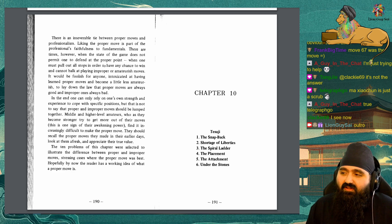In the end, one can only rely on one's own strength and experience to cope with specific positions, but that is not to say that the proper moves and improper moves should be lumped together. Middle and high level amateurs, who as they become stronger try to get more out of their moves, find it increasingly difficult to make the proper move. They should recall the proper moves they made in their earlier days, look at them afresh, and appreciate their true value. The 10 problems of this chapter were selected to illustrate the differences between proper and improper moves, stressing cases where the proper move was best. Hopefully by now the reader has a working idea of what a proper move is.